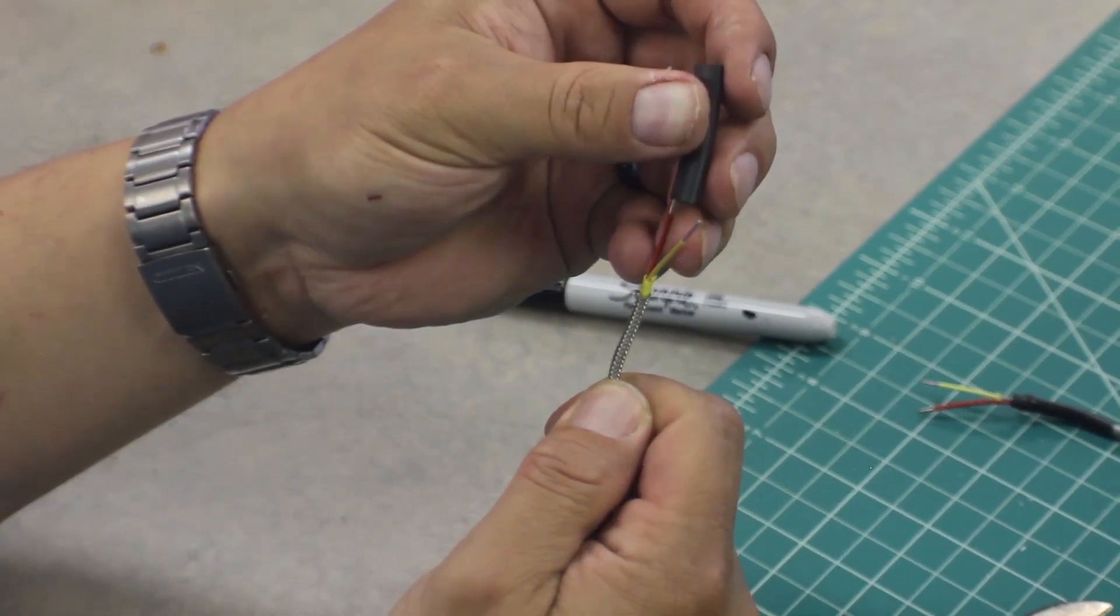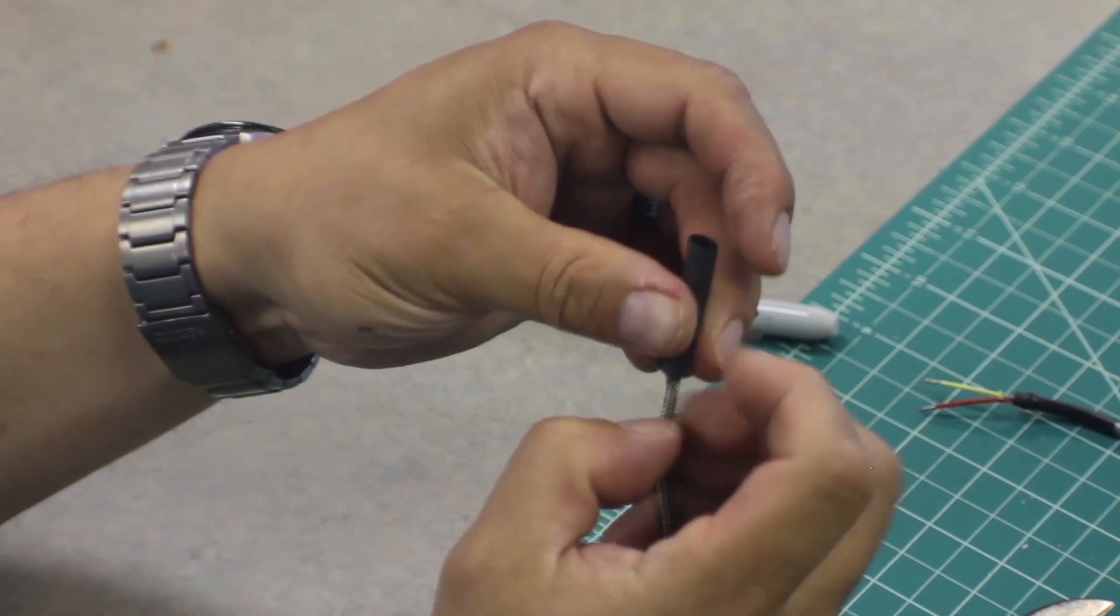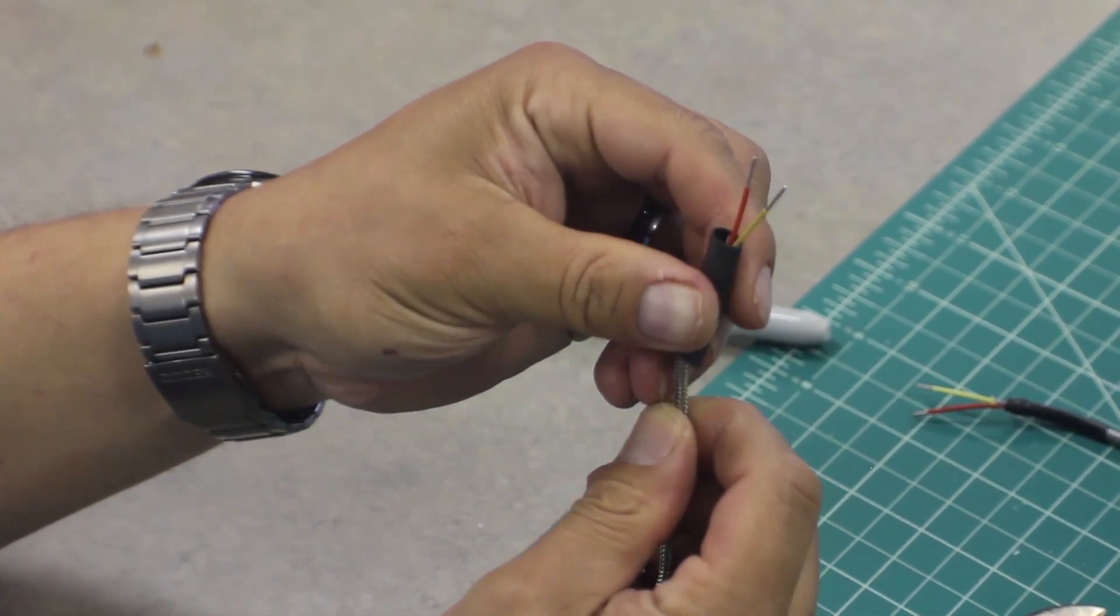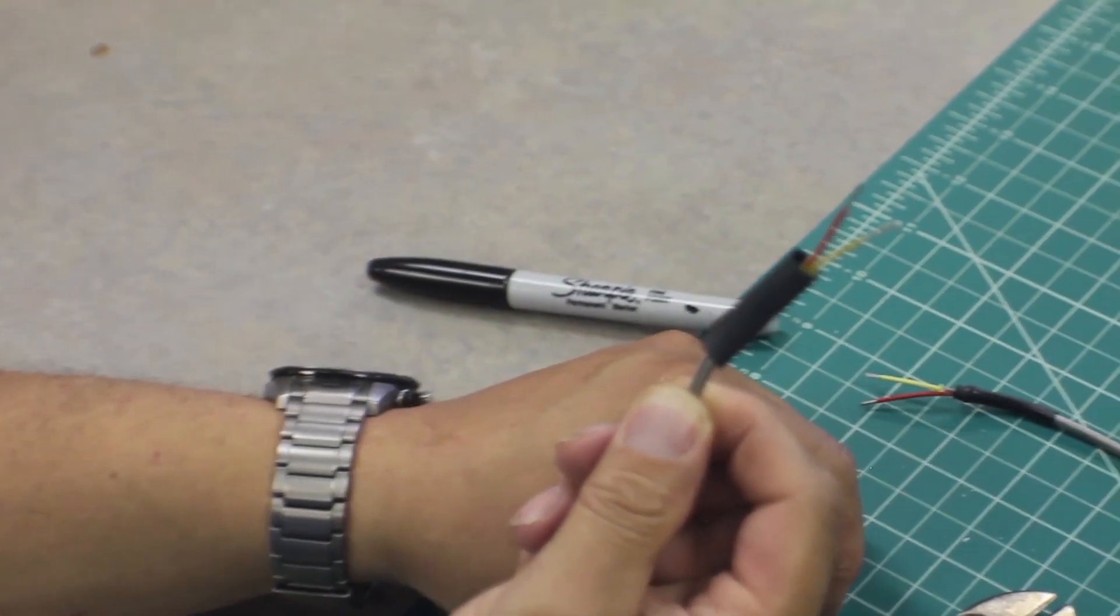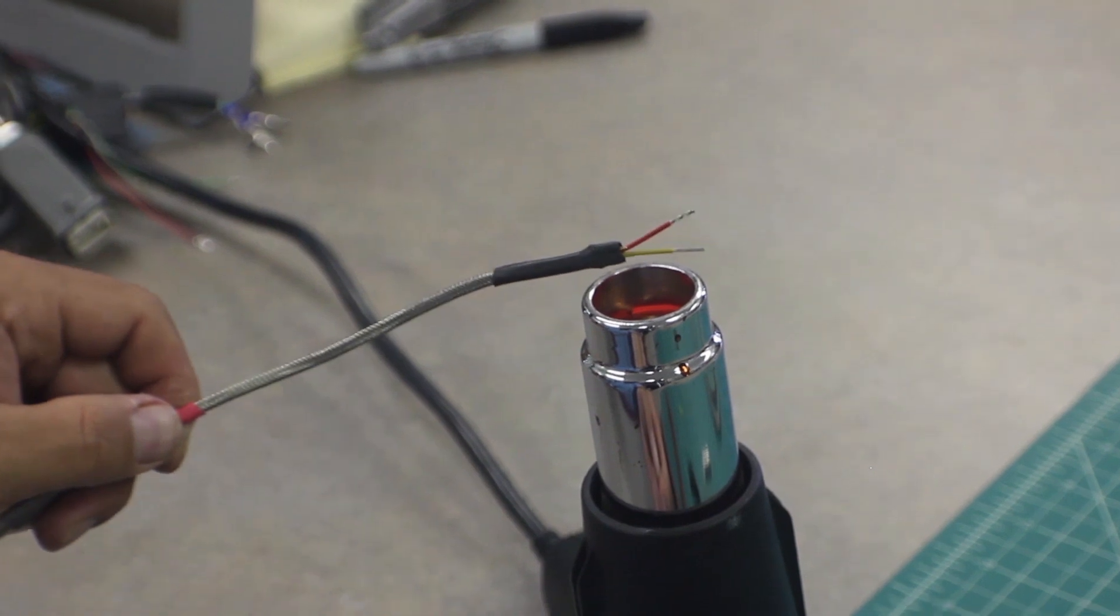The final step is to install the one inch length of quarter inch shrink tubing, so it overlaps both the stainless steel outer braiding and signal wires. Then, shrink the tubing using a heat gun.